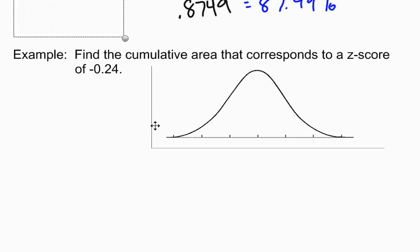Here I just want to do another example of finding the area under a normal curve. So here's our example. Find the cumulative area that corresponds to a z-score of negative 0.24.